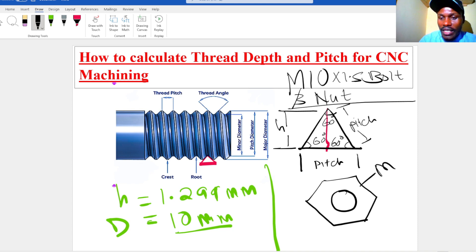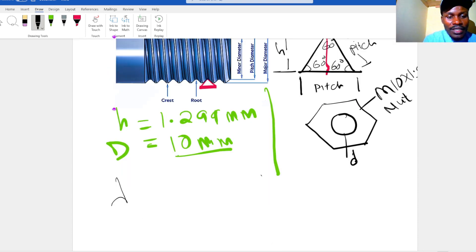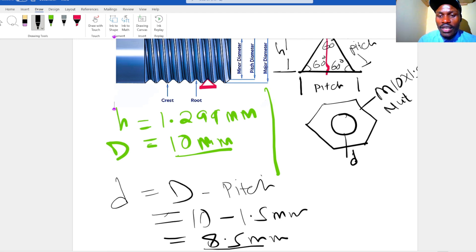This one is an M10 by 1.5 nut. So how do we know the diameter of this hole to drill? The minor diameter d is given by outer diameter minus pitch, which is 10 minus 1.5 mm. That will give you 8.5 millimeters. So we'll drill a hole of 8.5 mm, then you can go ahead and use an M10 tap to generate the thread.